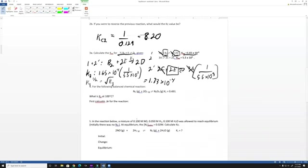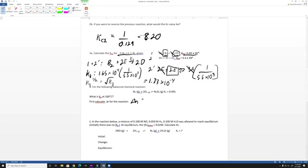Moving on. For the following balanced equation, what is KP at 100 degrees Celsius? First calculate delta n for the reaction. Delta n is simply the coefficient of the products in the gas reaction minus the coefficients of the reactants added together. So the coefficient of the products is 1 minus the coefficient of the reactants, which is 1 plus 2, which is 3. So our delta n is negative 2.